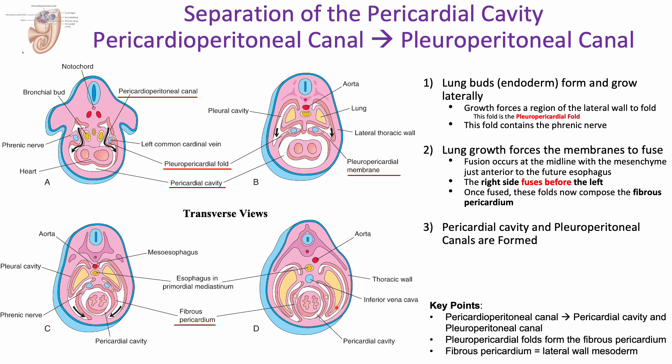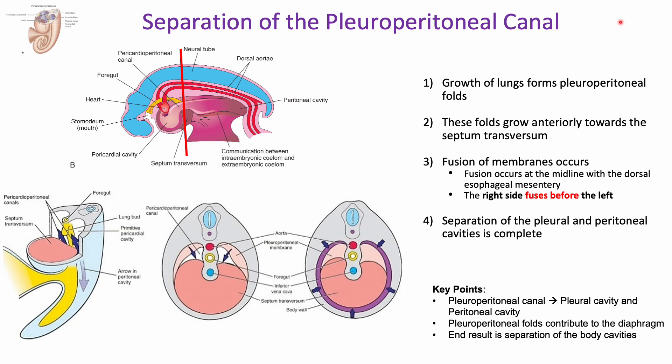We went from pericardial to peritoneal canal; now that the pericardium is separated, we're left with the pleuroperitoneal canal. Our end result is the pericardial cavity and the associated pleuroperitoneal canals. The pleuroperitoneal canals are surrounding the lungs and still connected with the peritoneum inferiorly, because we don't have diaphragm development yet. The fibrous pericardium surrounds the heart, and because it was derived from the pleuropericardial folds, it is composed of somatopleure — lateral wall mesoderm forced to the midline to form the fibrous pericardium. Now we must do one more separation: separating the pleuroperitoneal canal.